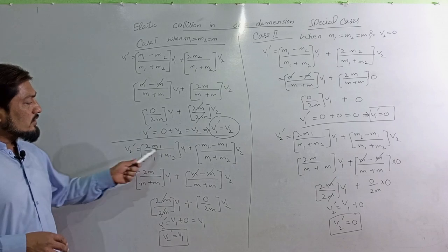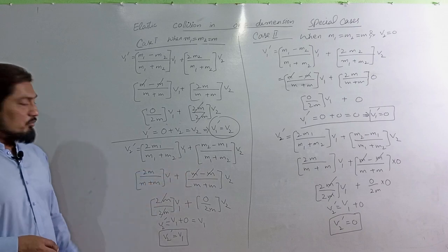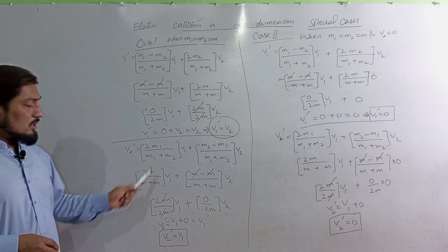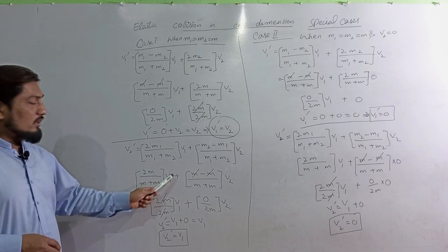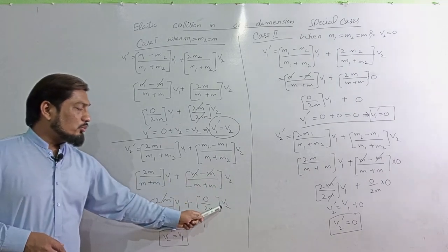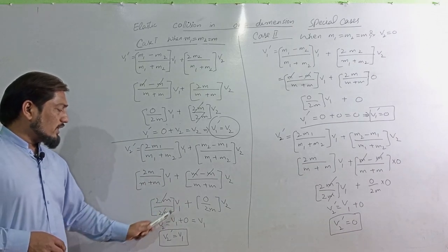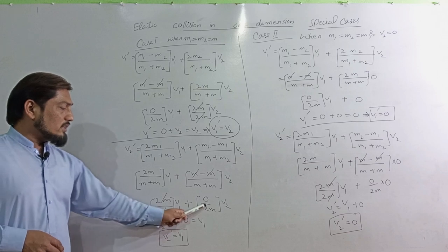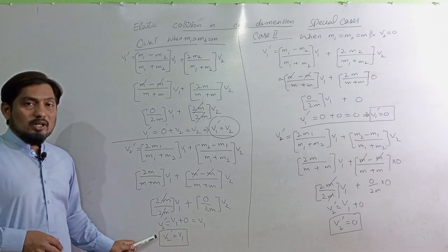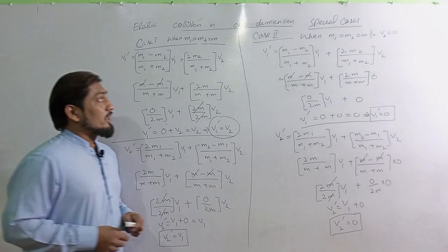Now let's see the second ball. V2' equals 2M1 divided by M1 plus M2 times V1 plus M2 minus M1 divided by M1 plus M2 times V2. Substituting gives 2M divided by 2M times V1 plus 0, which equals V1. Both balls interchange their velocities.